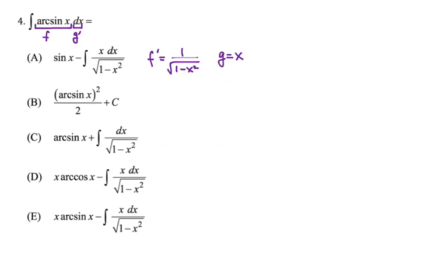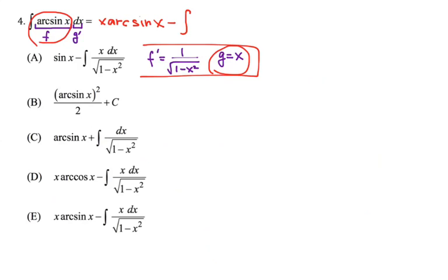Therefore, the first portion is f times g: x times arc sine of x, minus the integral of the other two — x over square root of 1 minus x squared dx. That becomes our expression. Which one would that be? It looks like choice E becomes the answer.